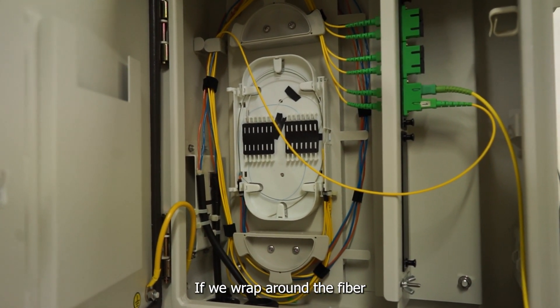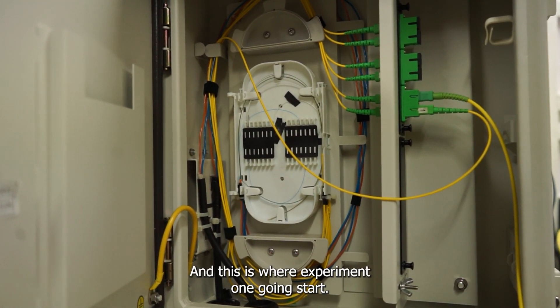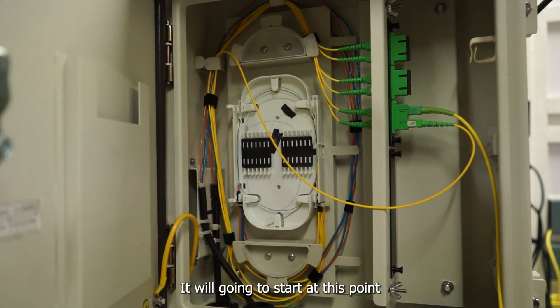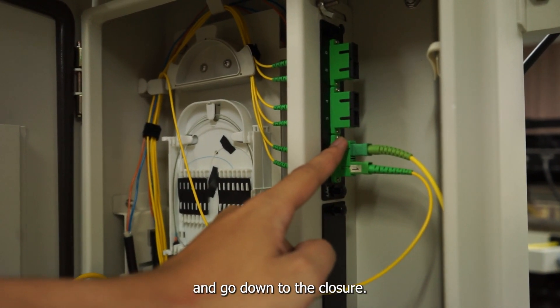It wraps around the fiber and distributes each line. This is where experiment 1 starts—from this point going down to the closure.